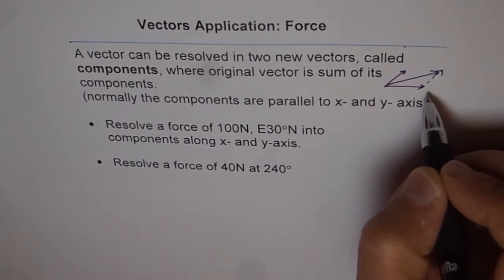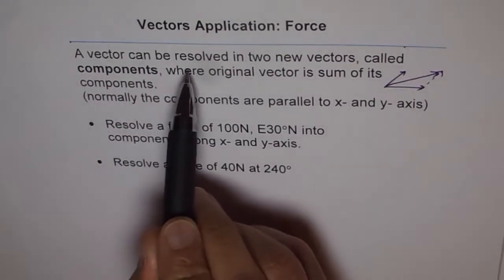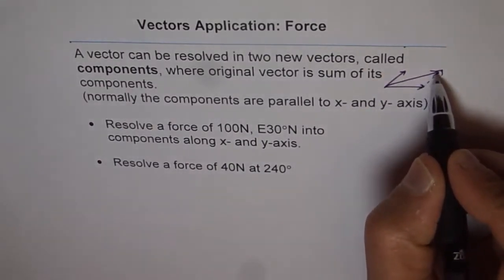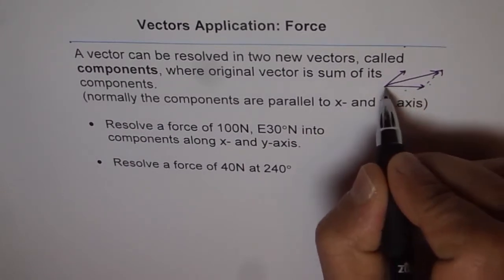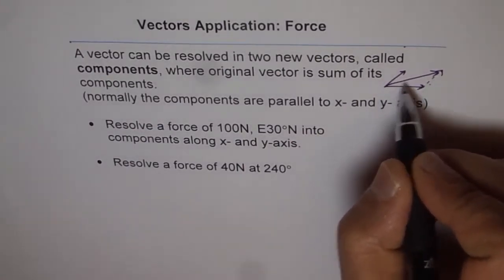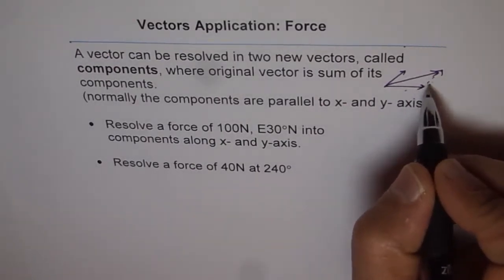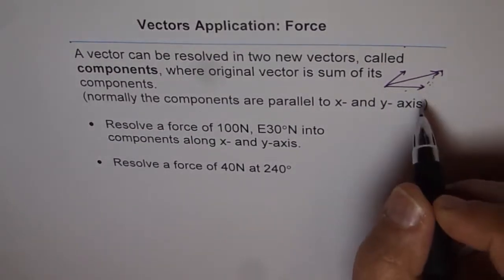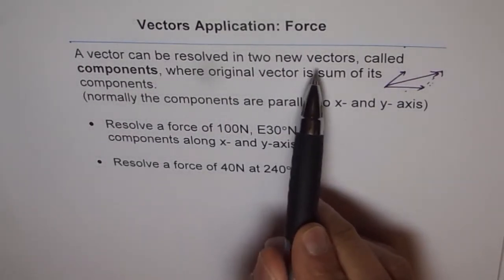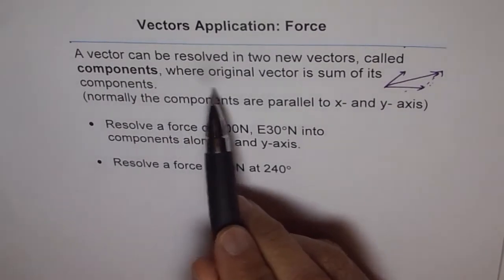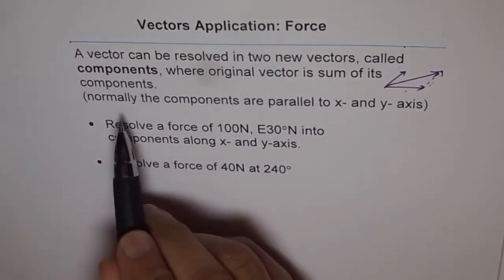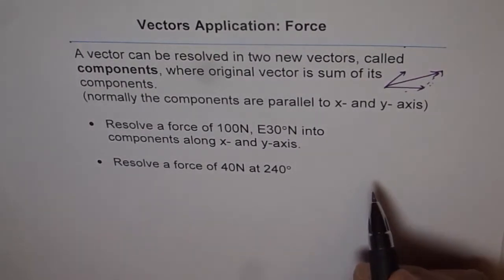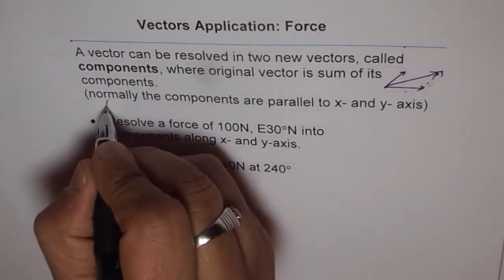A vector can be resolved into two new vectors called components. If we take a given vector, we can resolve it into vectors a and b, where they add up to form the original vector. So a and b are the components of the original vector. Normally the components are parallel to the x and y axis, but not always. When they are parallel to x and y axis, we call them rectangular components.